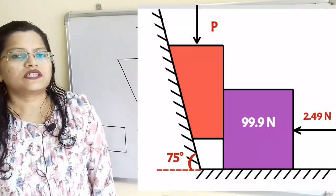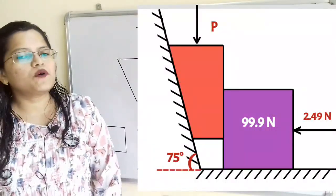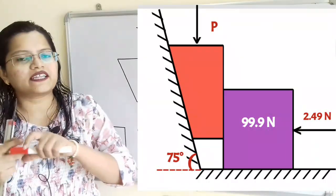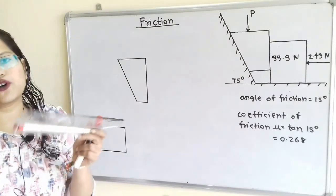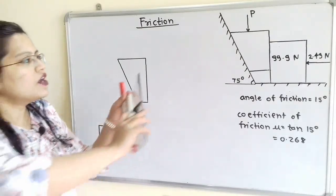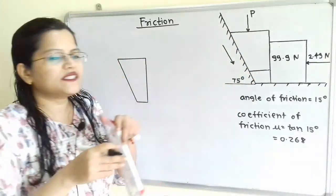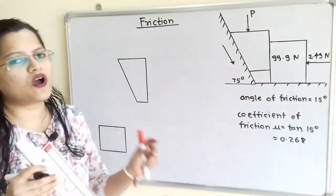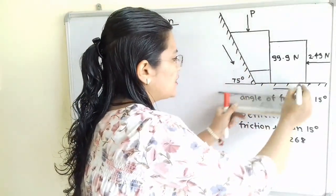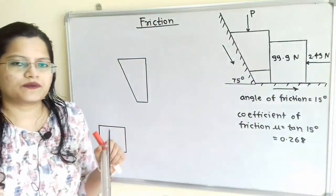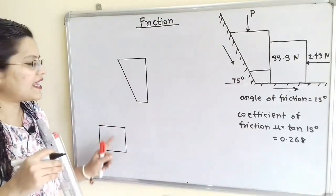We will first decide the motion of the wedge as well as the block. The wedge will move in the direction of applied force P, that is in the downward direction. Along this inclined surface we will show the motion which is parallel to the inclined surface — so this is the motion of the wedge. Now this wedge is in contact with the block, so the block will move towards the right hand side, and we will show the motion of the block accordingly.